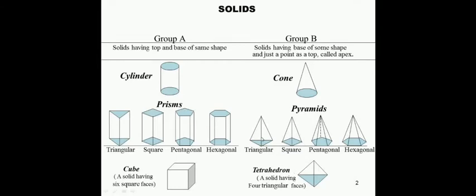For a triangular pyramid also there are four triangular faces. The difference between a triangular pyramid and a tetrahedron is that in a tetrahedron, all four triangles are equilateral triangles of the same size. For a cube, since there are six faces of equal size, it is also called a hexahedron — hexa means six, tetra means four. This is the three-dimensional view of the tetrahedron.